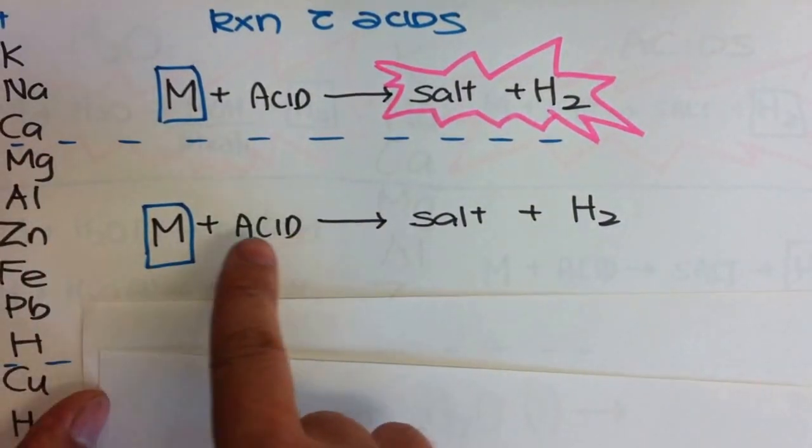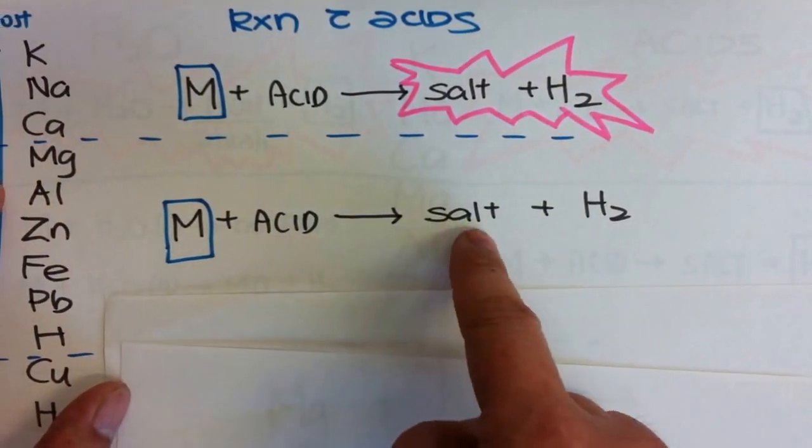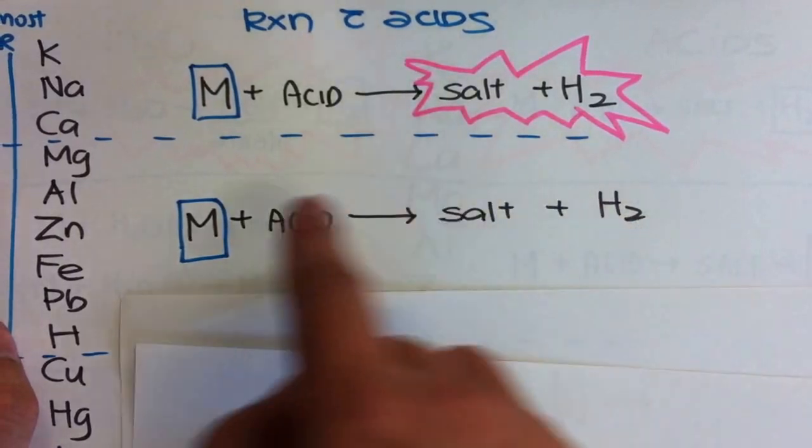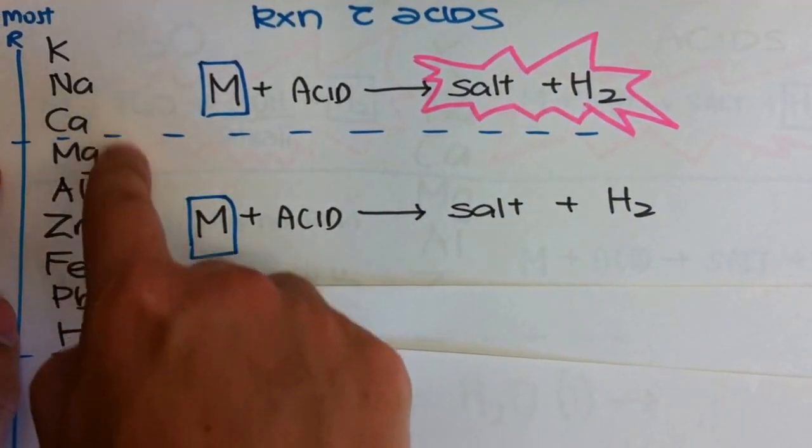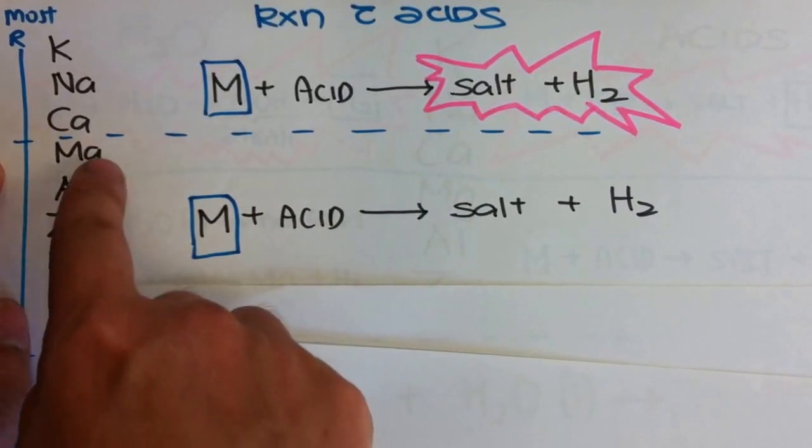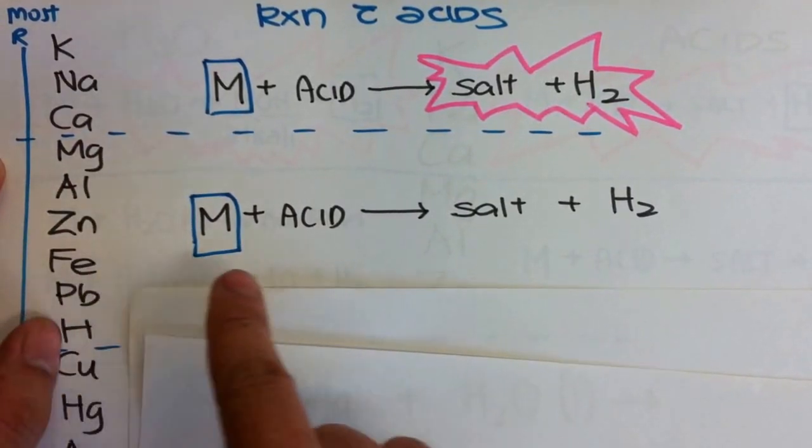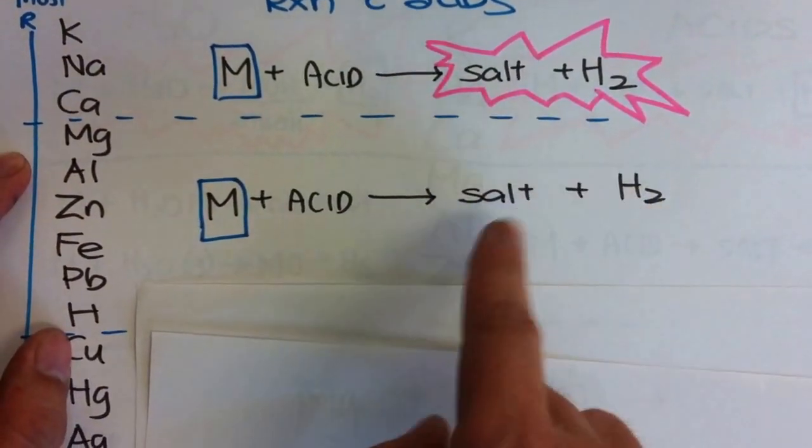Next group here, next category. When they are reacting with acid, you will get a salt plus hydrogen gas. But take note, the reaction as you go down the list, this group here, the reaction will simply get lower and lower, slower and slower. Reaction will still come on, but it will be slower and slower.